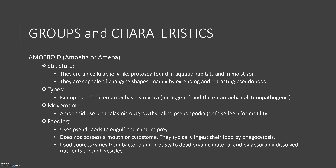I will be addressing each group separately, first being amoeboid. They are unicellular, jello-like protozoa found in aquatic habitats and in most moist soil areas. They are capable of changing shapes, mainly by extending and retracting their pseudopods.